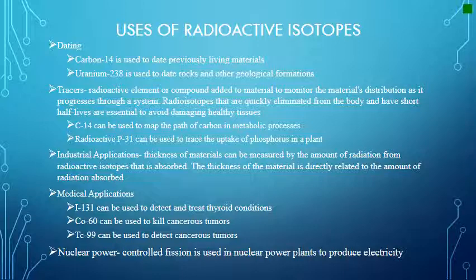Medical applications abound as well. I-131 can be used to detect and treat thyroid conditions. Cobalt-60 can be used to kill cancerous tumors. TC-99 can be used to detect cancerous tumors. Nuclear power uses controlled fission in nuclear power plants to produce electricity.